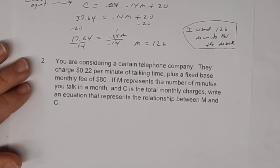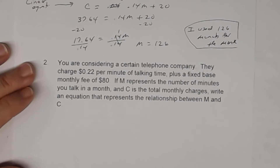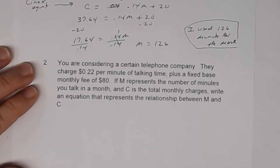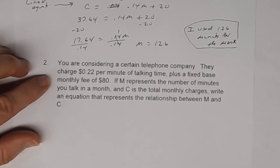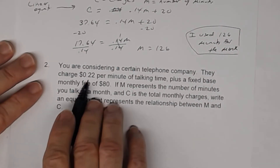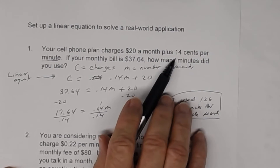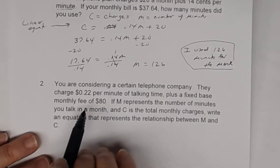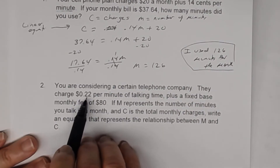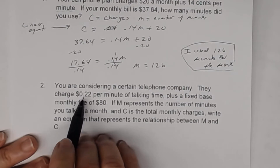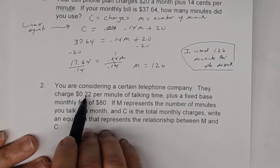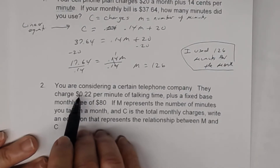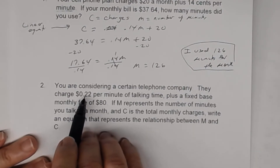Let's look at number two. You're considering a certain telephone company. They charge 22 cents per minute — notice how this is written in terms of dollars, so this is actually 22 cents, although it's written in terms of dollars — while this one was written as cents. And notice that the monthly cost is $80, so the units match up here. For number one, the units did not match up — 14 cents had to be converted to dollars.